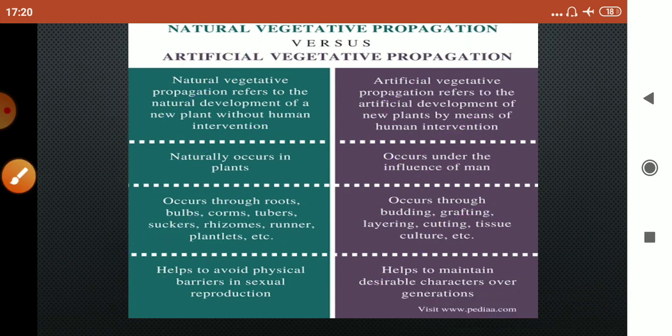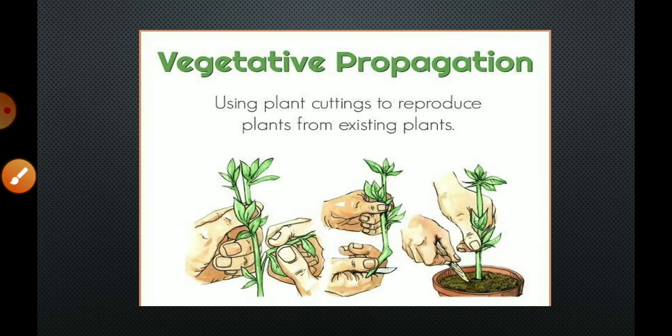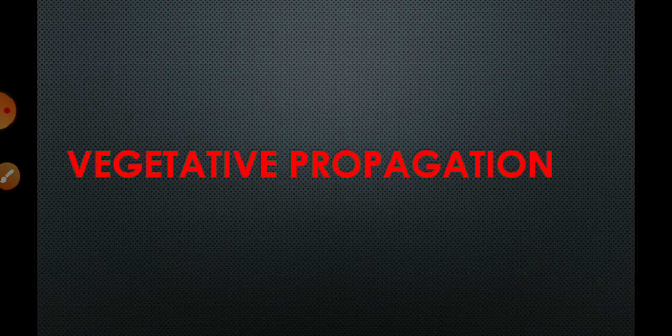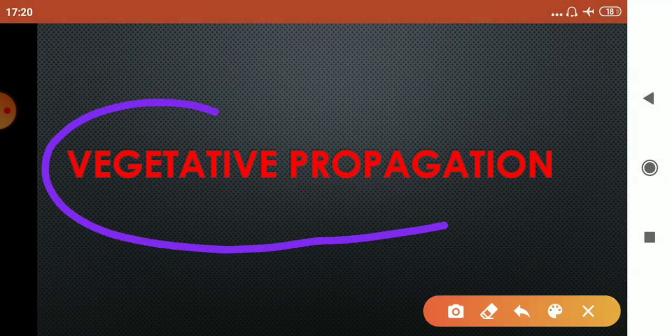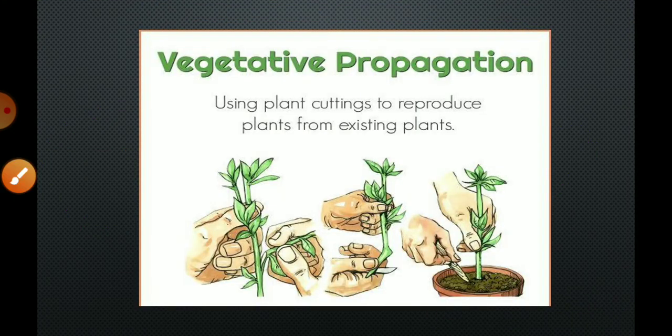So children, let us summarize what we have studied in this video. Plants have three modes of reproduction: asexual, sexual, and vegetative propagation. In this video, we learned about vegetative propagation, which is a method in which we use plant parts to increase the number of plants.